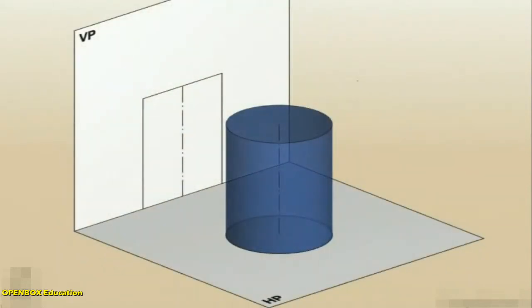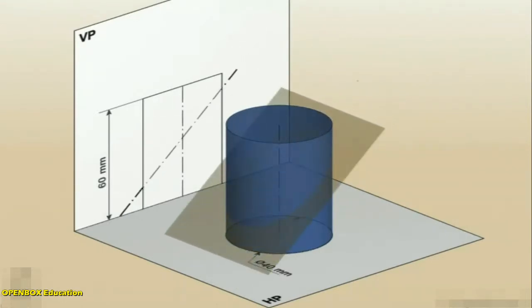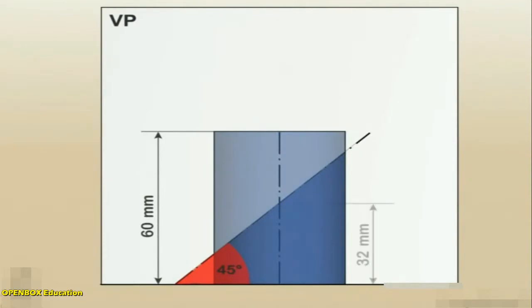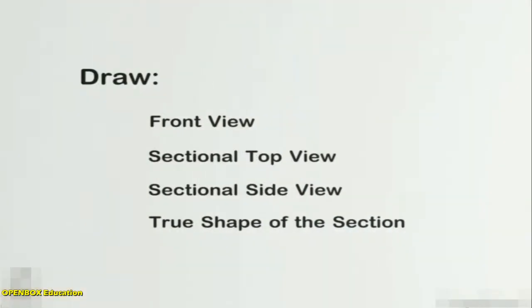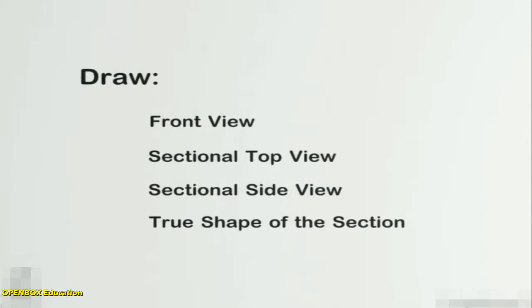A cylinder of 40mm diameter, 60mm height and having its axis vertical is cut by a section plane perpendicular to the VP, inclined at 45 degrees to the HP and intersecting the axis 32mm above the base. Draw its front view, sectional top view, sectional side view and true shape of the section.